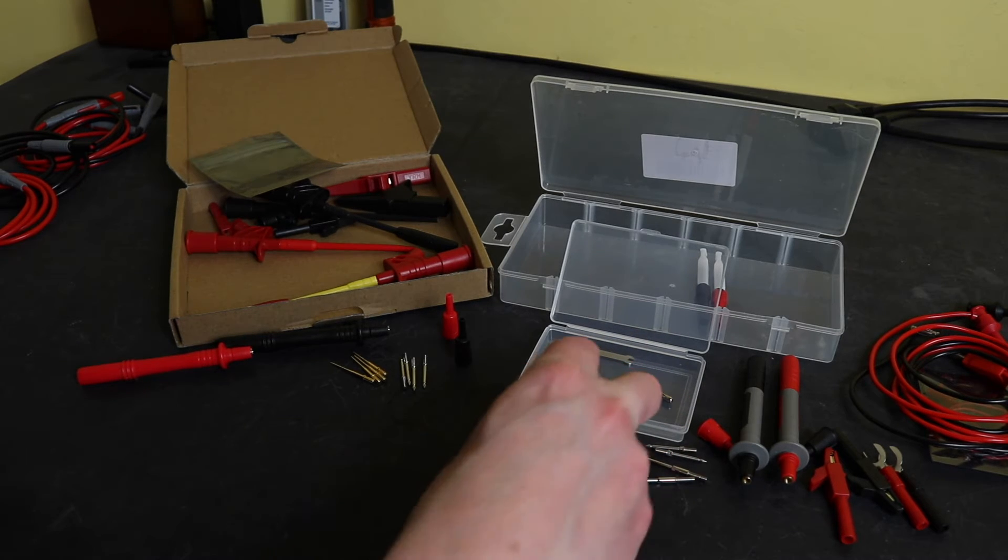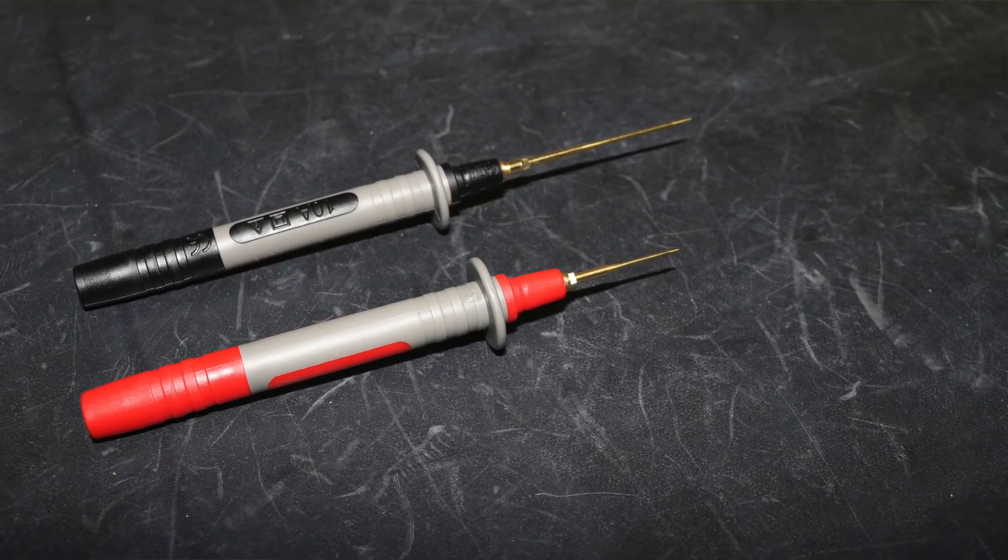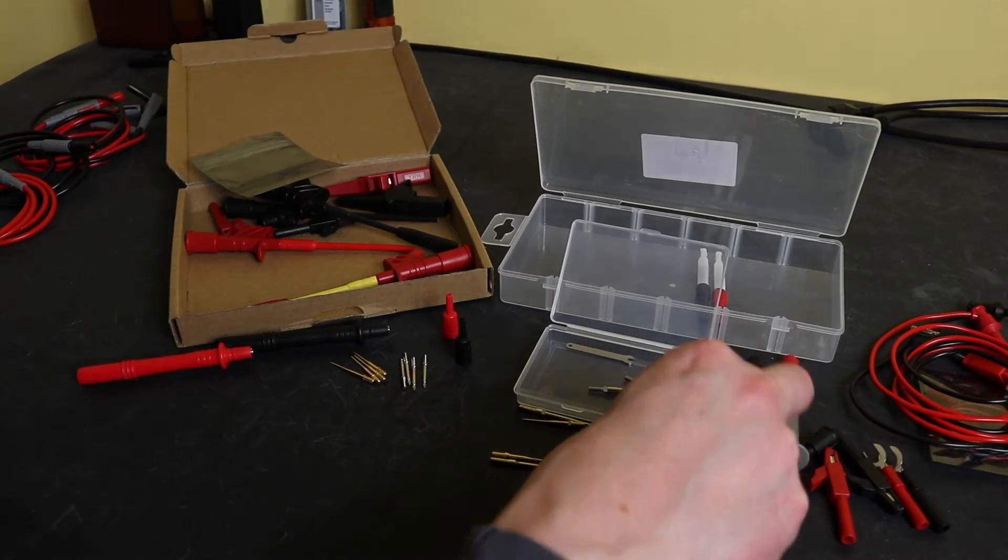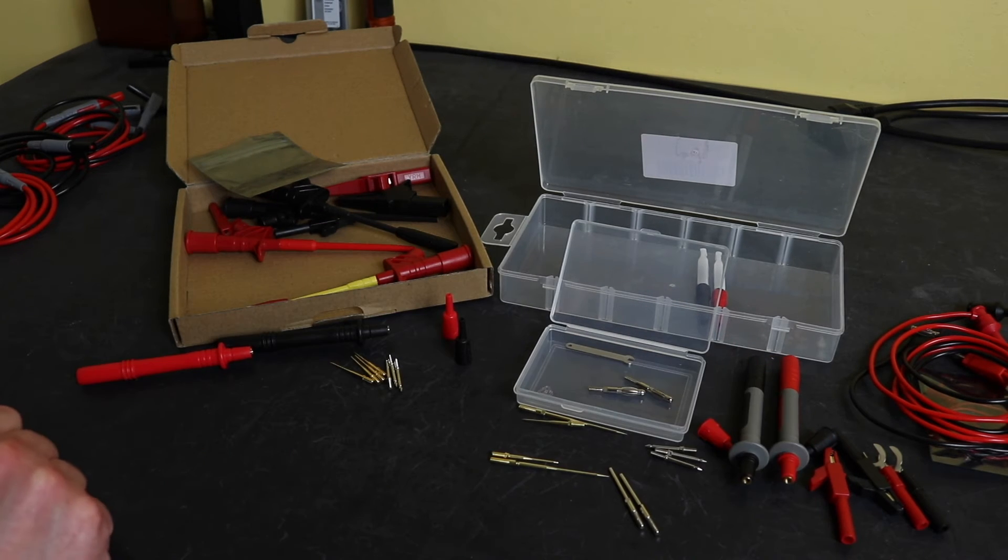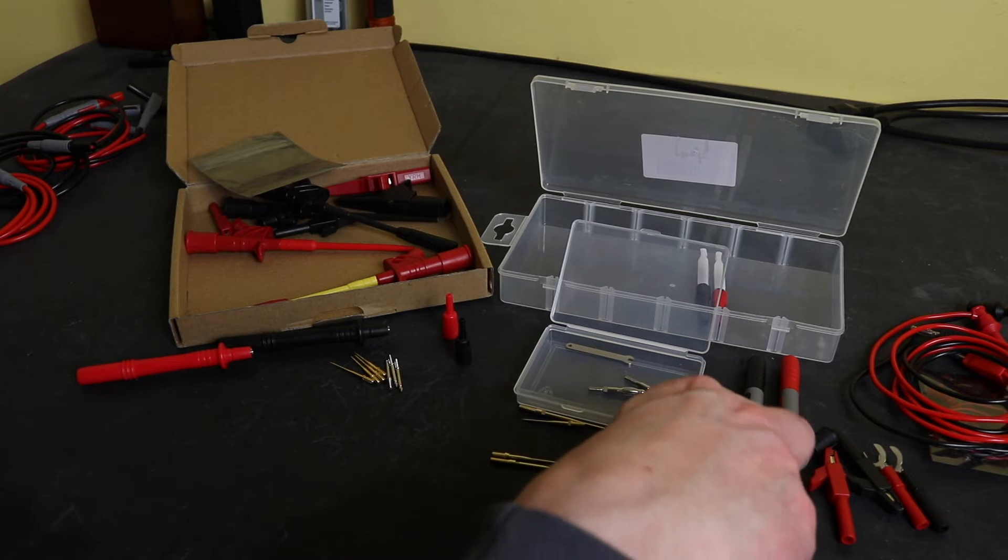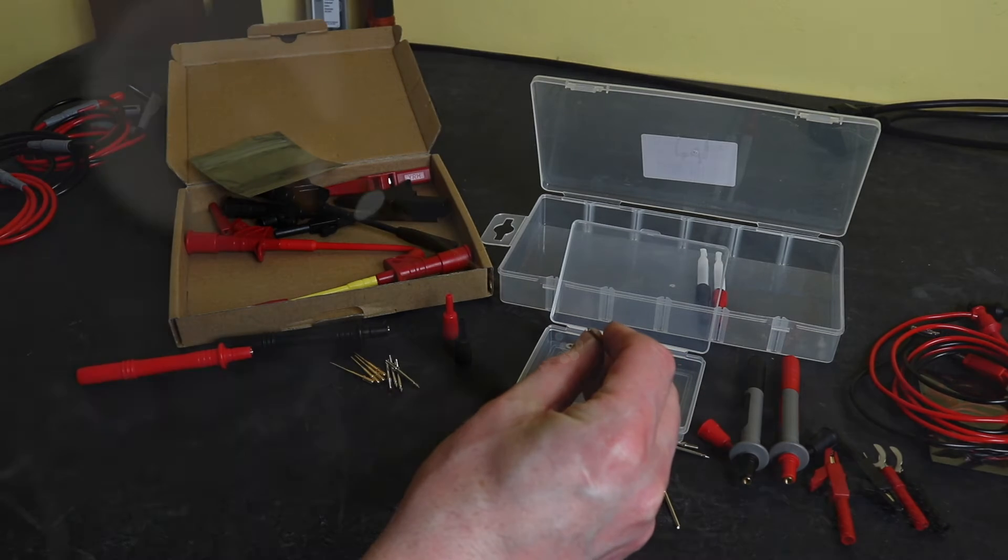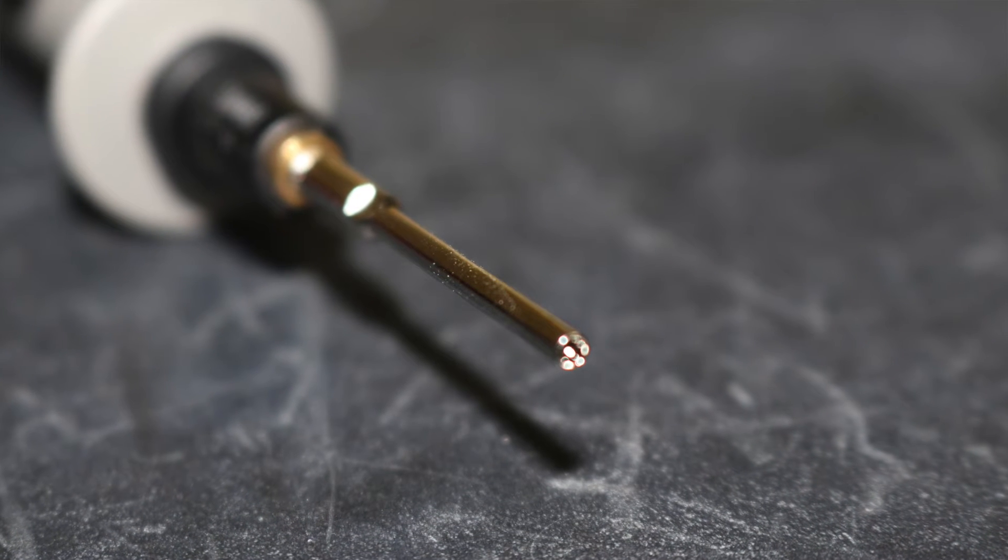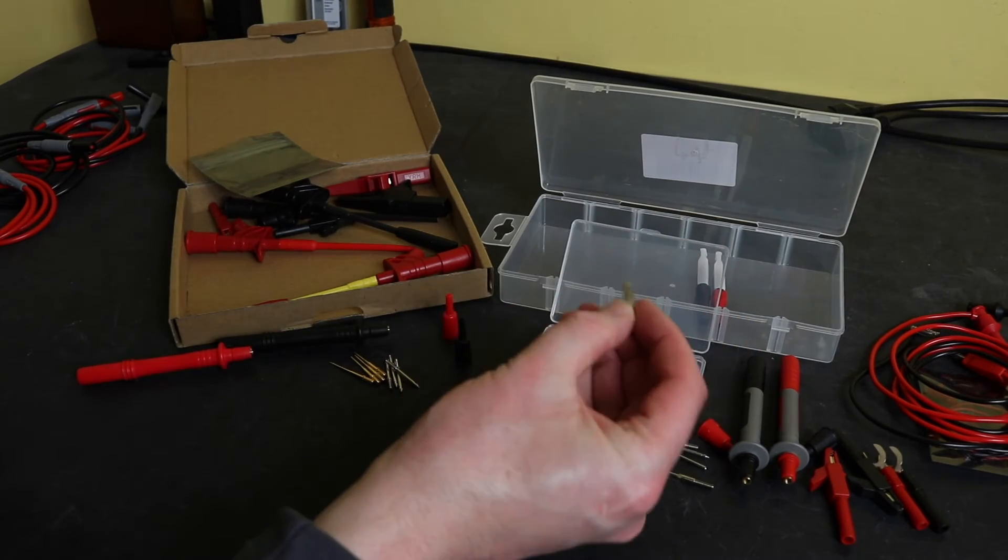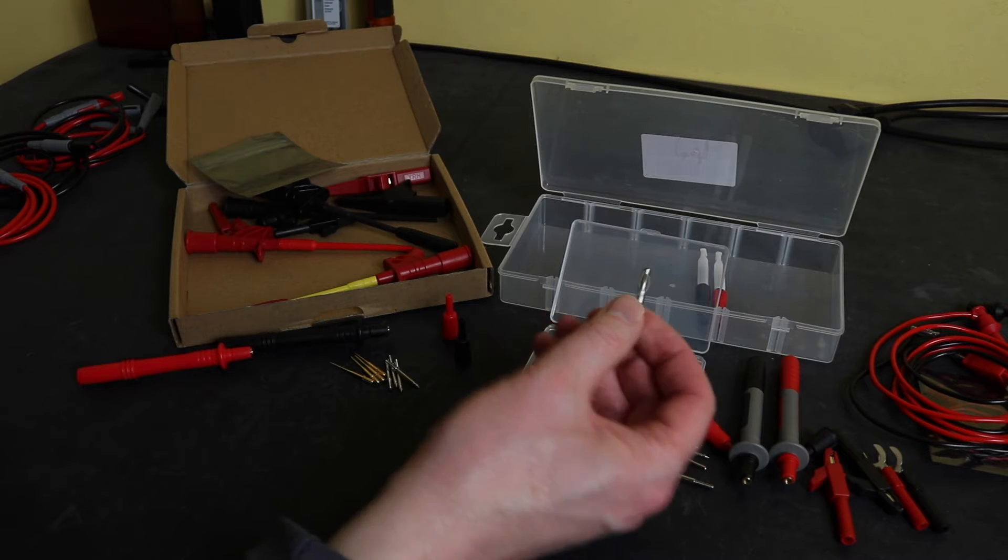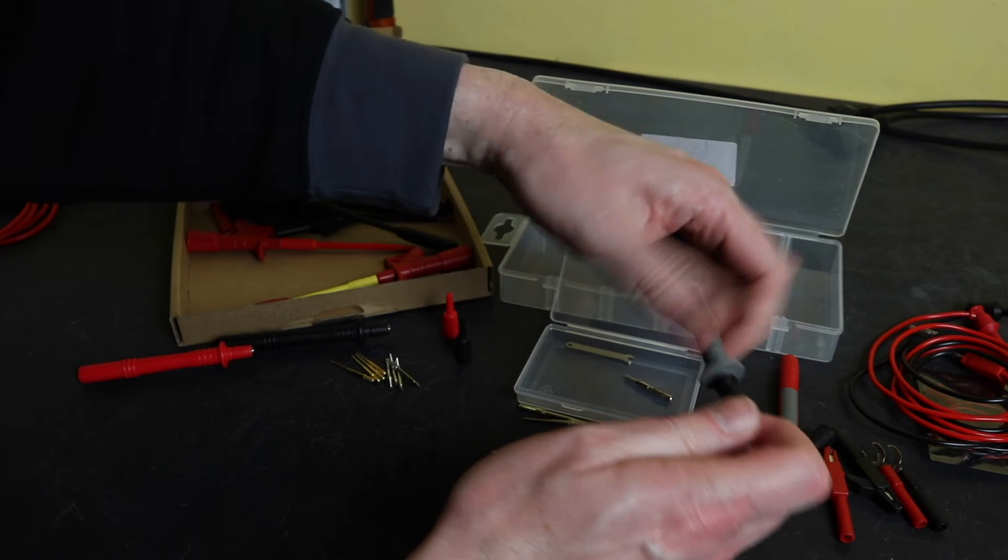In terms of the standard plated tips, you get a standard set here that are the same as the ones from Prostor. Then you get this set that have a concave tip to them, so that you can put them over a pin and they'll sit on top of a pin. You also get a set of banana adapters, standard four millimeter banana adapters to go in the probes for the set from Clique.